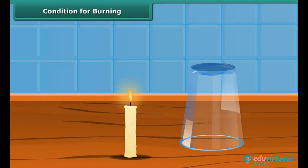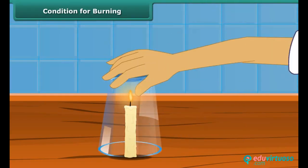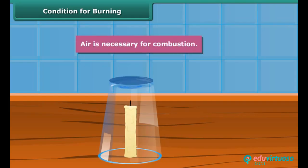Let us discuss the conditions necessary for burning. Light a candle and cover it with a glass tumbler. You will see that the candle stops burning after a while. This implies that the candle burns freely in the presence of air. Therefore, air is necessary for combustion.